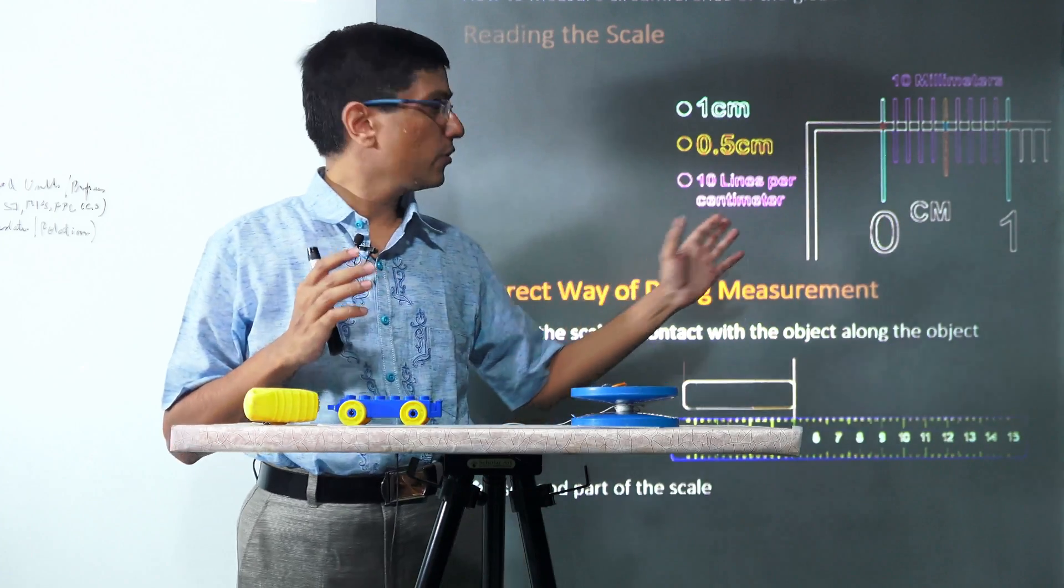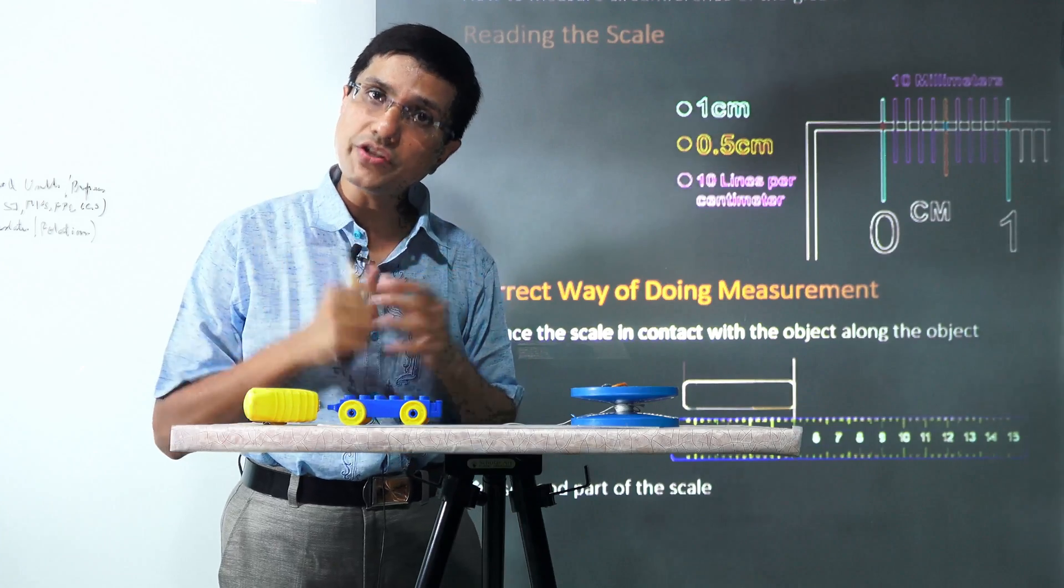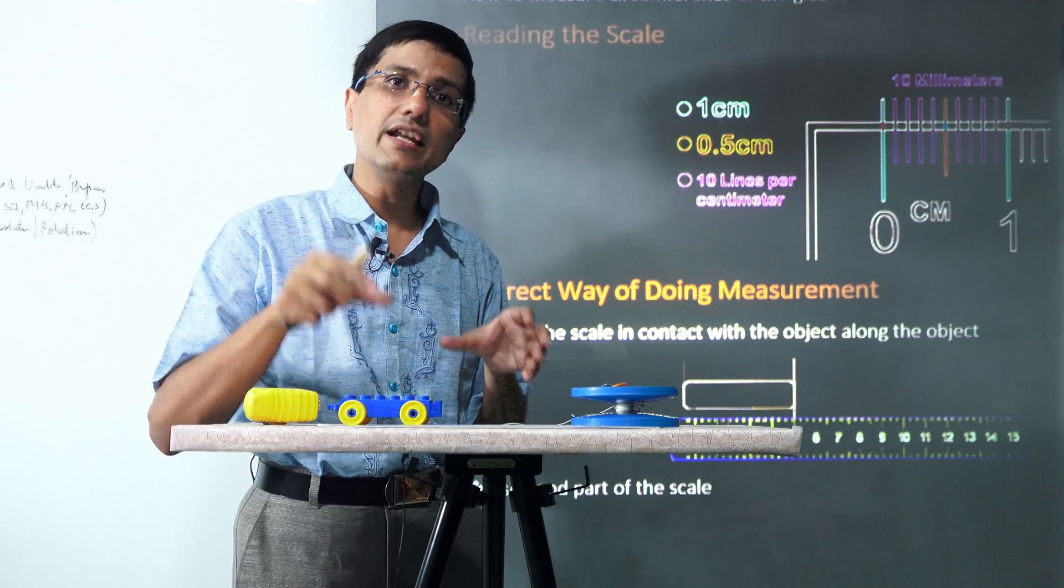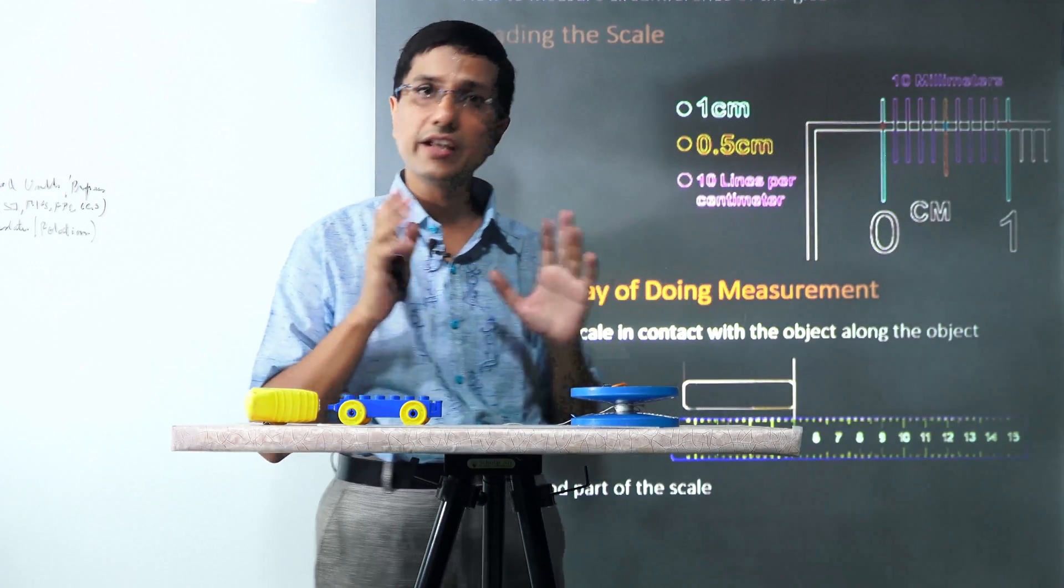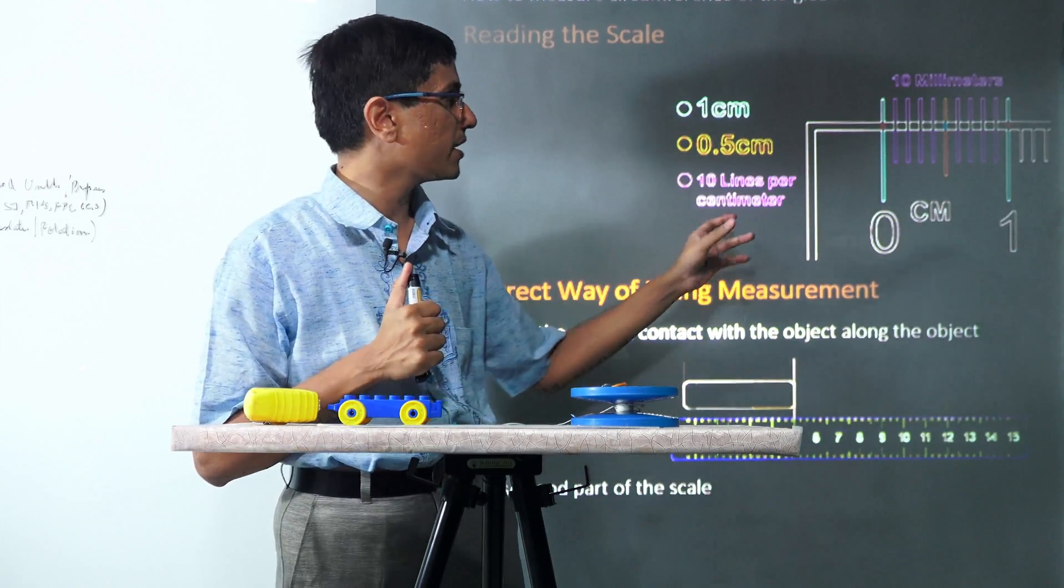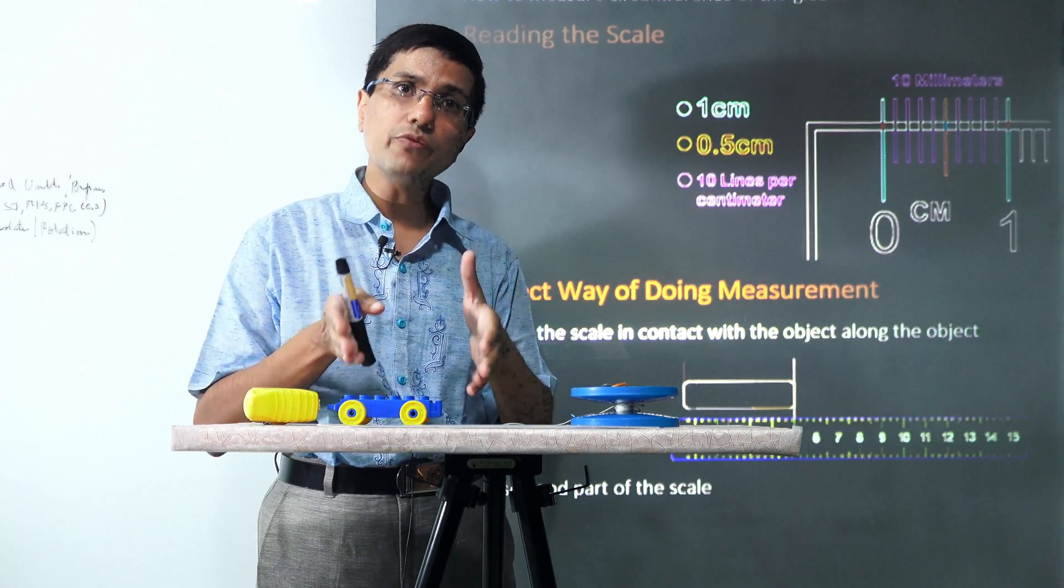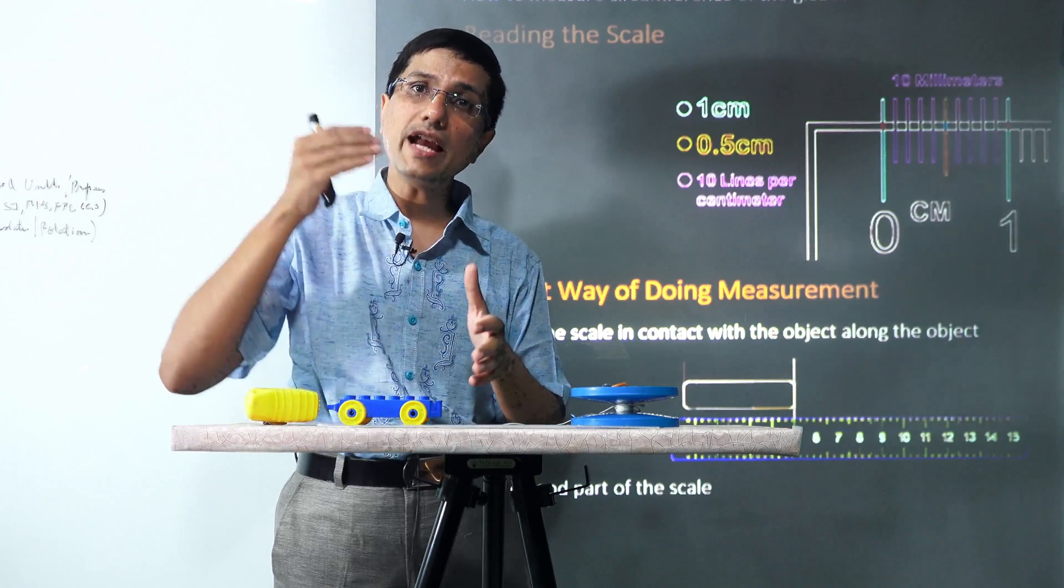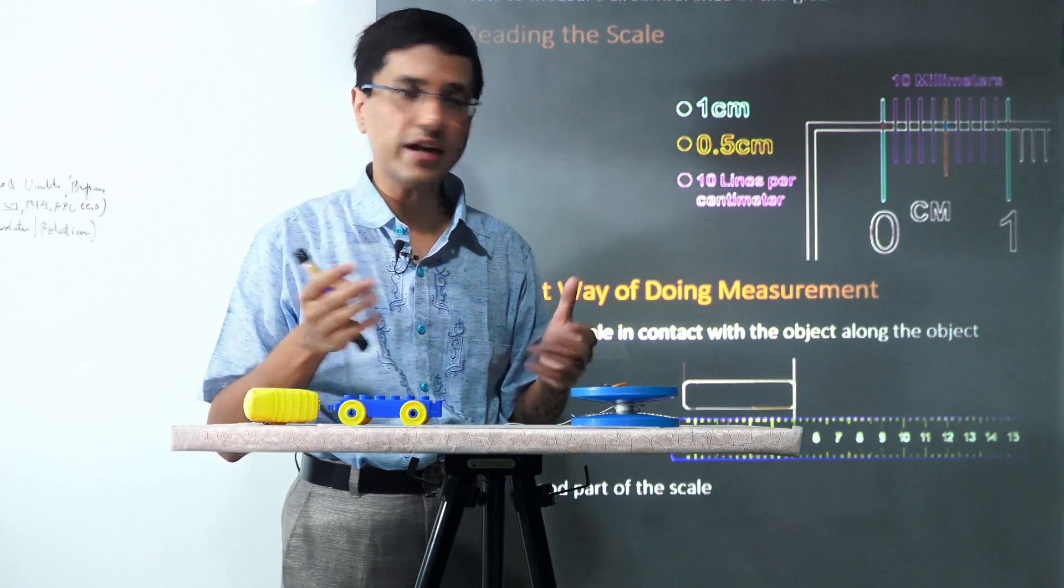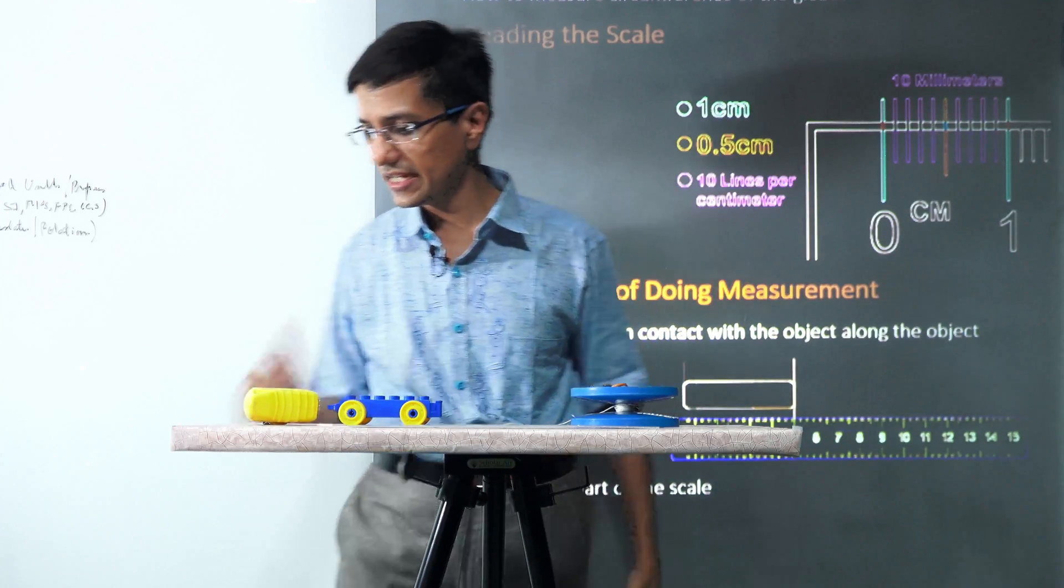When you are measuring using this kind of scale, you cannot measure quantities less than 1 millimeter because those are the smallest grades on this scale. That is the first thing you should remember. We should choose the device based on the accuracy of measurement required. If we need more accuracy than 1 millimeter, we obviously cannot use this scale.